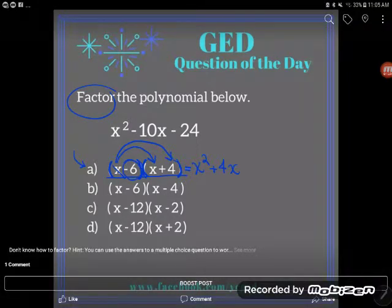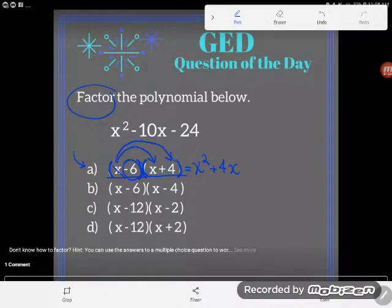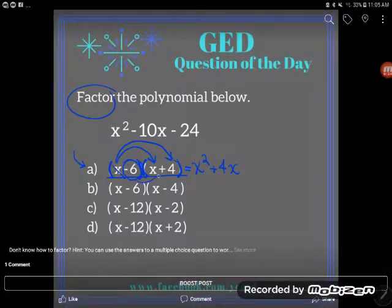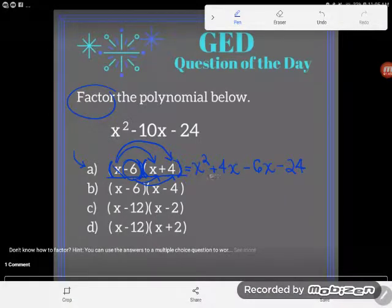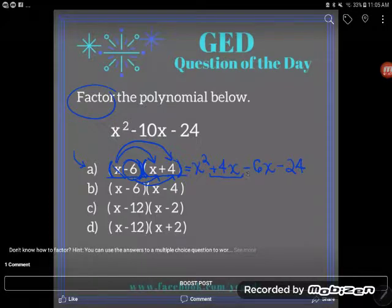Now I'll pass out the second term. Remember to take its sign with it—this is not a minus 6. When I'm multiplying, I think of it as a negative 6. So negative 6 times x is negative 6x, and negative 6 times positive 4 is negative 24. Now I'm almost done, but remember that if you can combine any like terms...